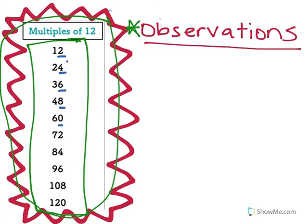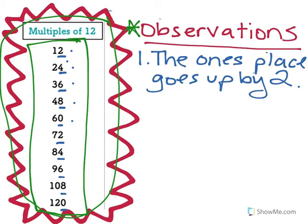So the ones place pattern is: 2, 4, 6, 8, 0 — and then it repeats: 2, 4, 6, 8, 0. That makes sense because we have a two, then four, six, eight, and another zero. How could I write that as an observation? I noticed that every time the ones place goes up by two — you can also say it increases by two. I've now written down my observation about the ones place.